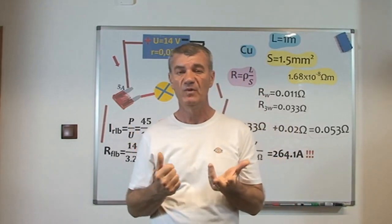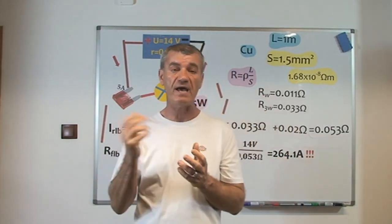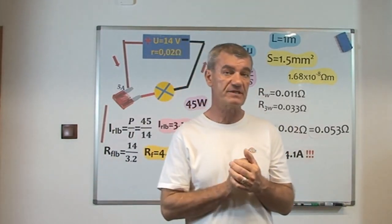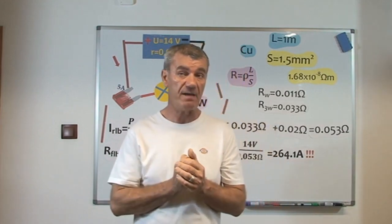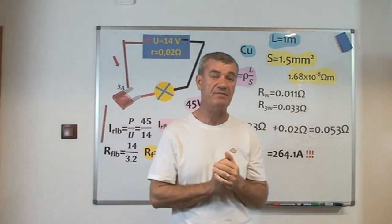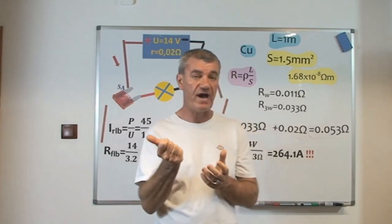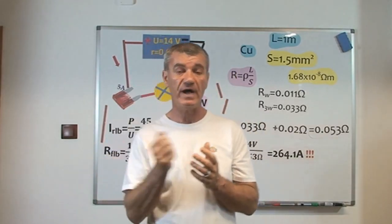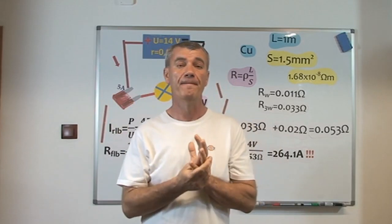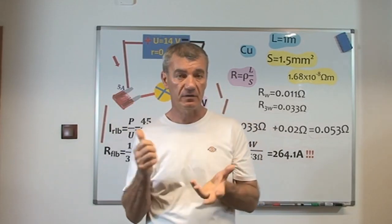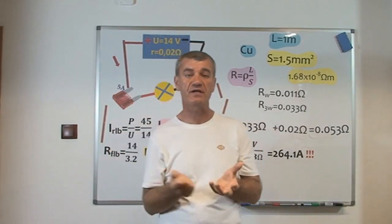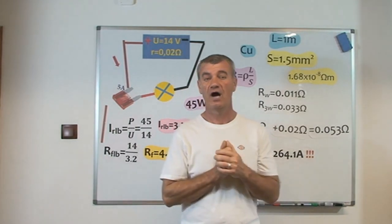The same we have the rated current for MCB, 6 amps, 10 amps, 16 amps, 25 amps, 32 amps, depending on the circuit in our house.